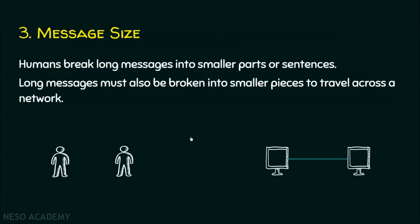The third element in the protocol is message sizing. If there is a very big message to be communicated to the destination, humans break the message into smaller parts or sentences. Likewise, our computer should also do that. If the capacity of the link is very small but the data to be transmitted is very big, the computer should break this big message into smaller units which the transmission medium can handle. This is what message sizing is about, and this is one of the things a protocol should do.